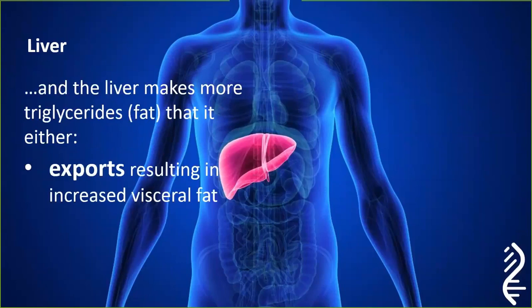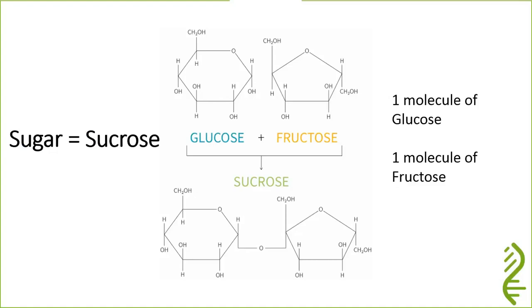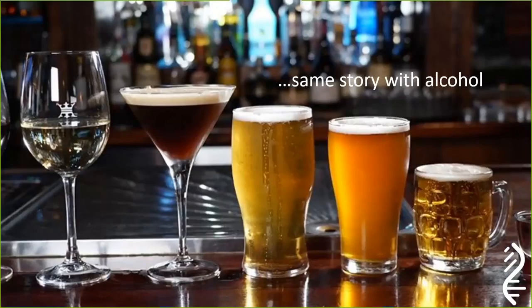The liver can export the fat, but this just increases visceral fat — you can see this on your cholesterol panel in your triglycerides, which is the fat your liver is exporting. If your triglycerides are over two, you've likely got insulin resistance. Or the liver stores the fat, resulting in fatty liver. And don't forget fructose — the sugar in orange juice is a combination of glucose and fructose. The fructose goes straight to the liver and gets turned into triglycerides and fat as well. The same story, unfortunately, applies to alcohol.